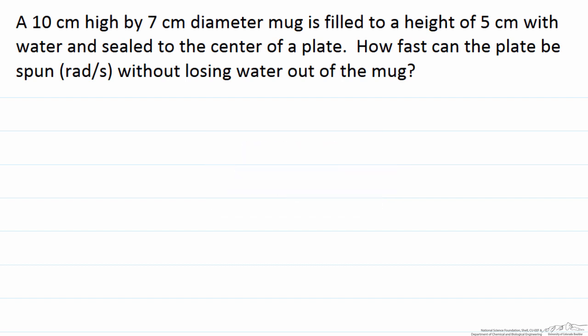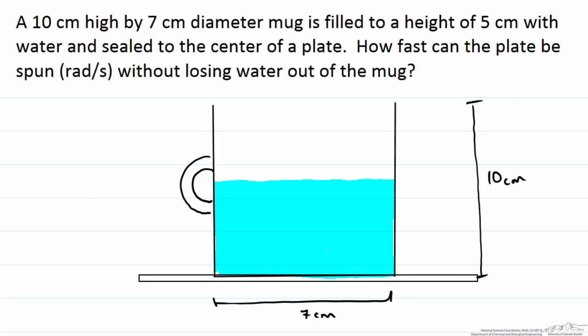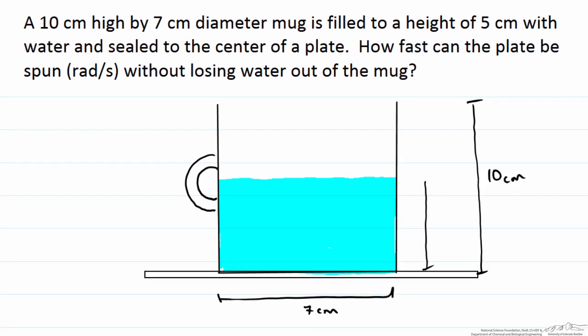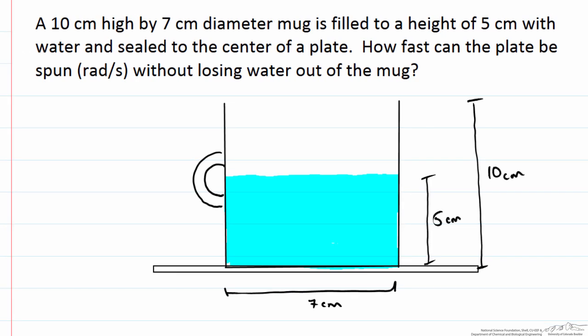Let's take a look at what is happening here. Here we have our mug filled halfway up with water. It is attached to a plate and we start rotating that plate until a point at which the water is going to come out of the mug. But how does that occur?